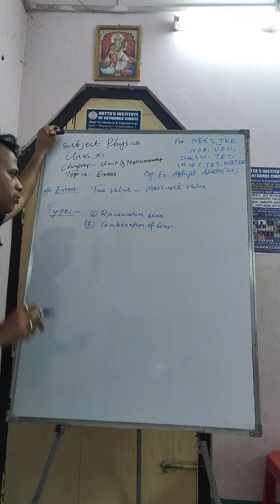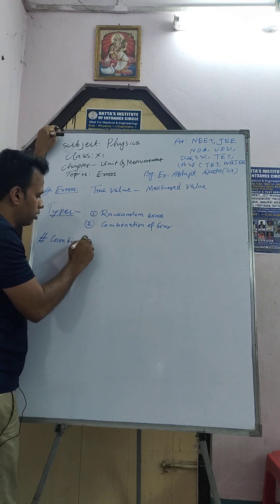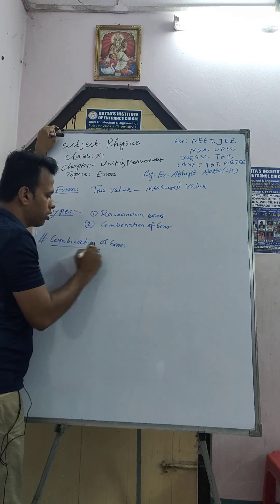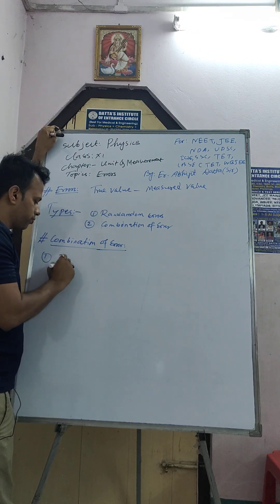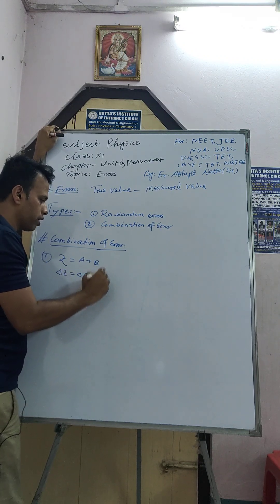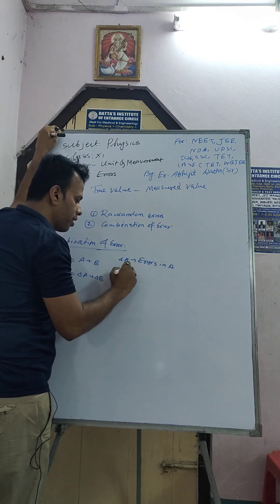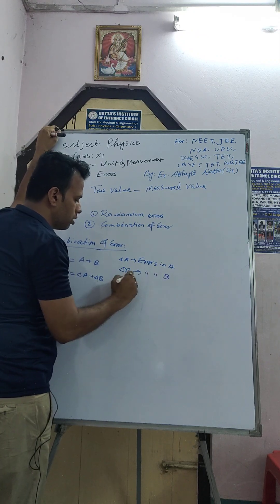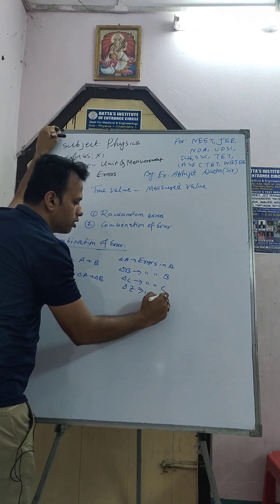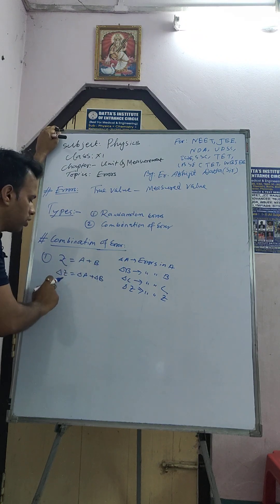Today we will discuss about the combination of errors. In combination of errors there are some formulas. I will write down all the formulas for combination of errors. Suppose z is equal to a plus b, then del z is equal to del a plus del b. Here del a means error in a, del b means error in b, and del z means error in z.